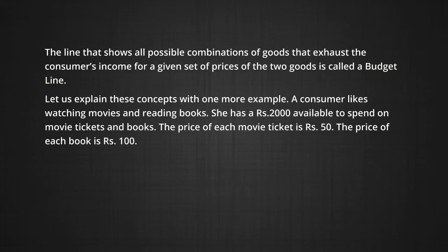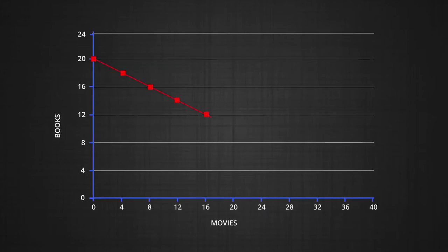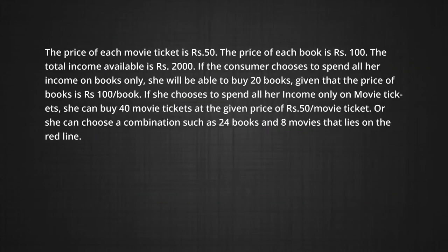Let us explain these concepts with one more example. A consumer likes watching movies and reading books. She has 2,000 rupees available to spend on movie tickets and books. The price of each movie ticket is rupees 50 and the price of each book is rupees 100. In the diagram, movie tickets are shown on the x-axis and books on the y-axis. If the consumer spends all her income on books only, she can buy 20 books. If she spends all her income on movie tickets, she can buy at most 40 movie tickets.